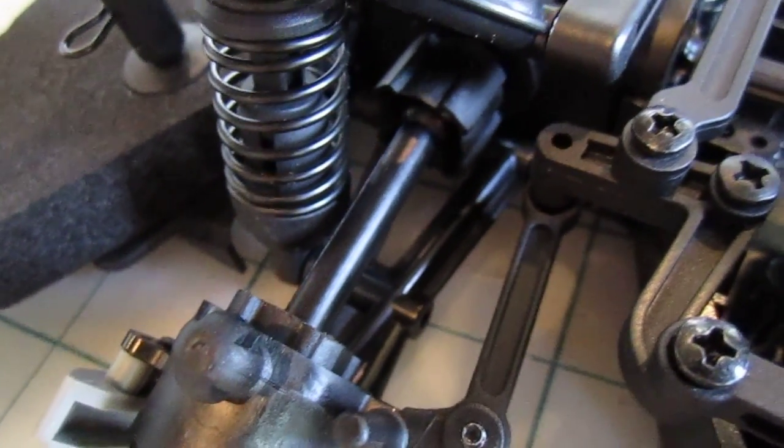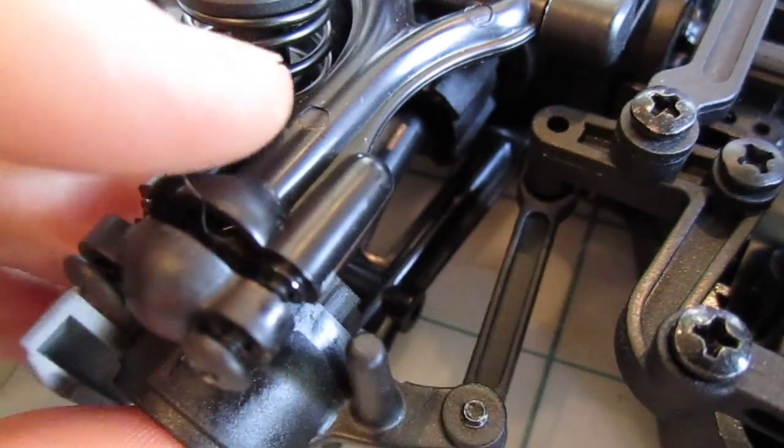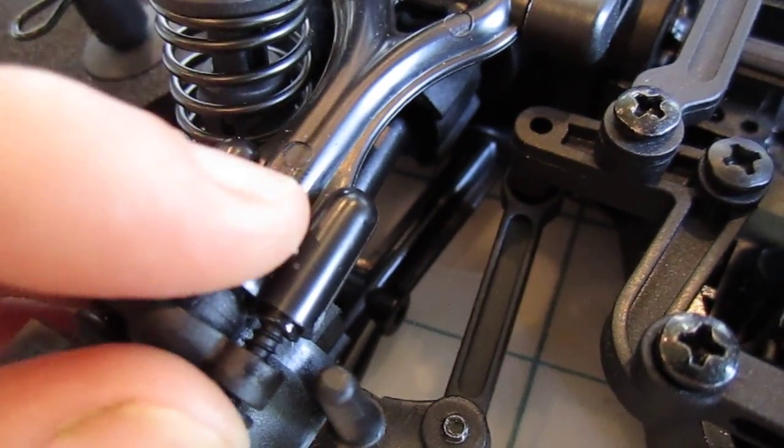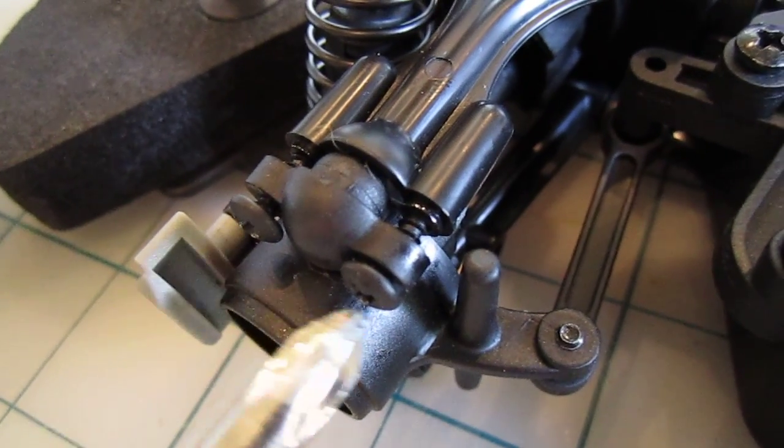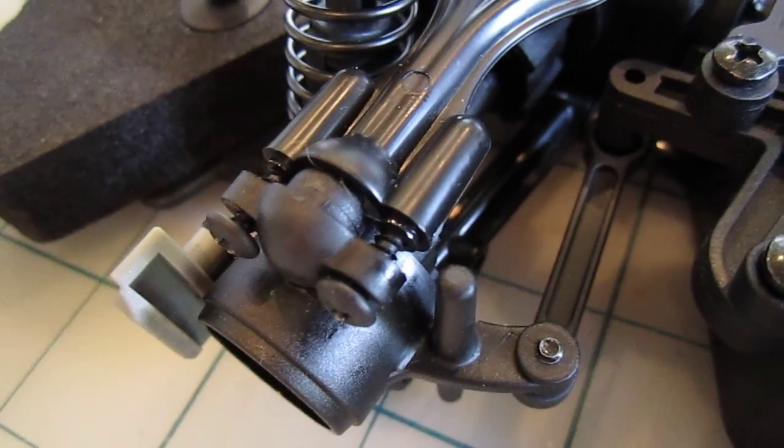Then you're going to reverse the process. You're going to lower this piece again, pop that ball back in there, use your Phillips screwdriver, and tighten those both back up.